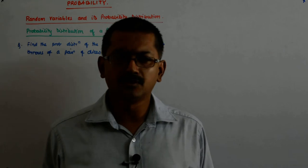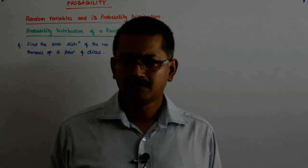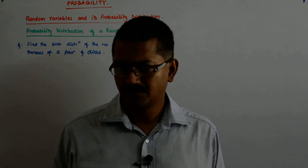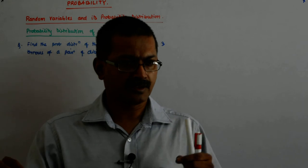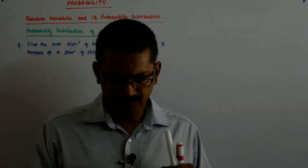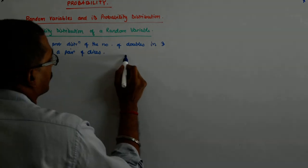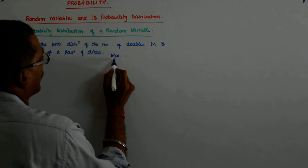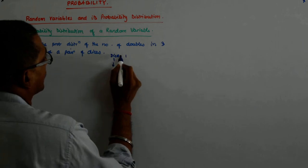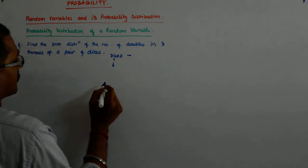In three throws of a pair of dice. Now when a pair of dice is thrown, how many samples, what will be the sample space? Thirty-six. For every one that you get there are six possibilities, and for every two there are six, every three. So for every six there are six.